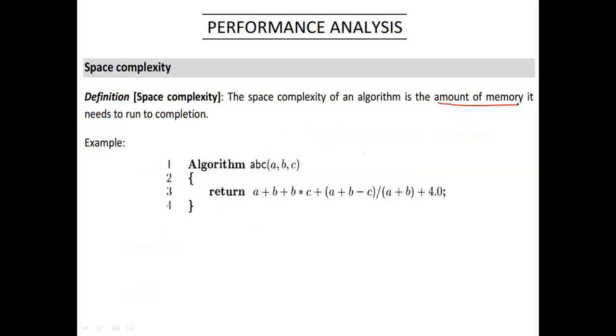We have to design the algorithm and analyze how much space complexity can be used. If you have a pseudo code, you have to analyze the code. This is one, two, three variables and one constant memory. In total, there are four memories.